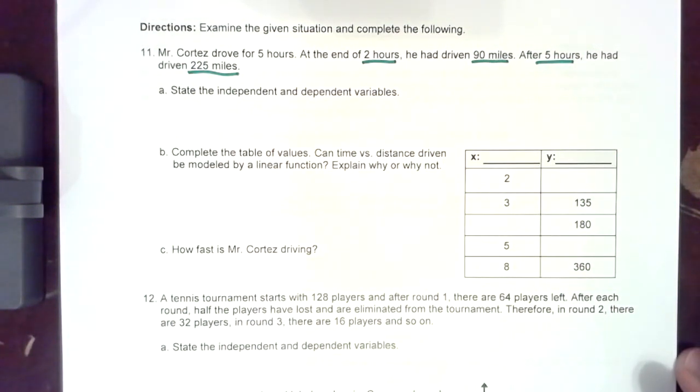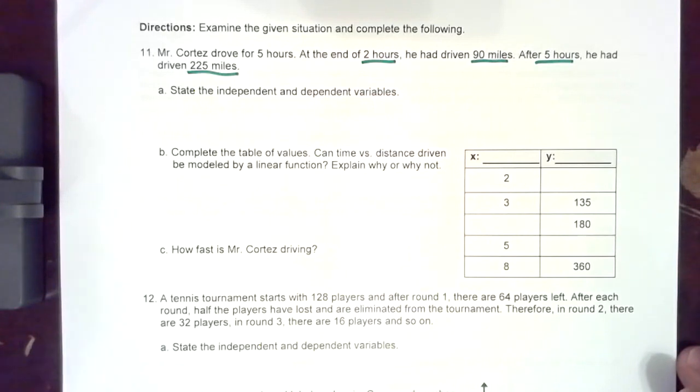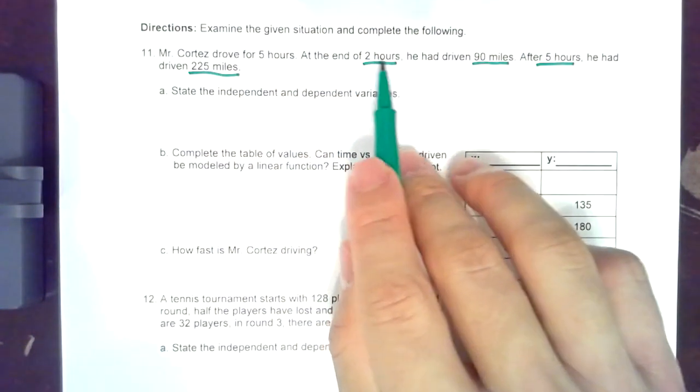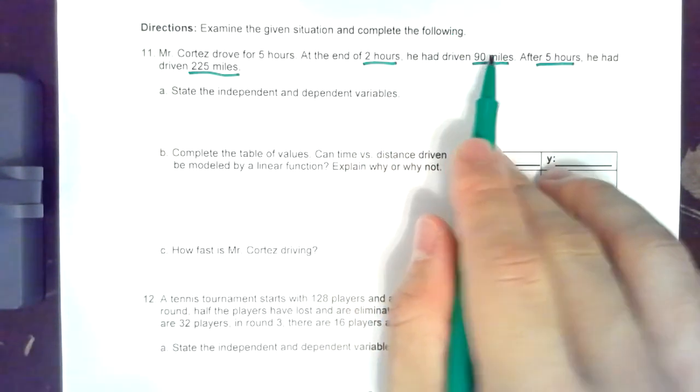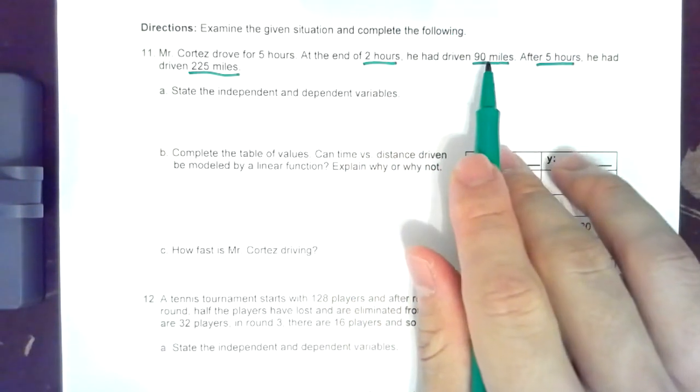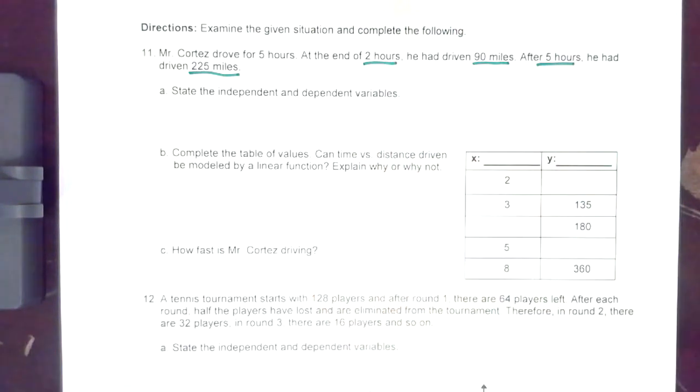So the very first thing we have to identify is what is considered the independent variable and what is considered the dependent variable. So is the amount of hours dependent on the amount of miles or is the amount of miles dependent on the amount of hours?